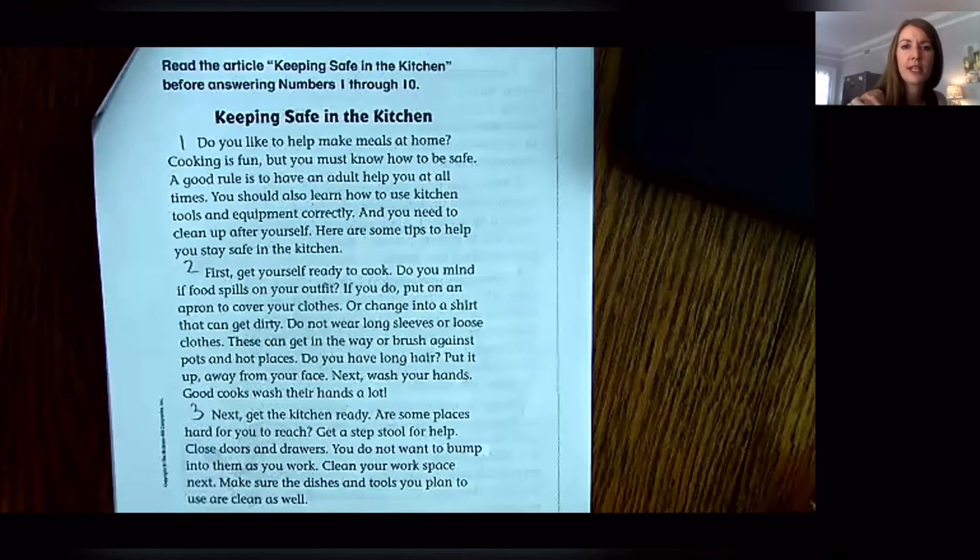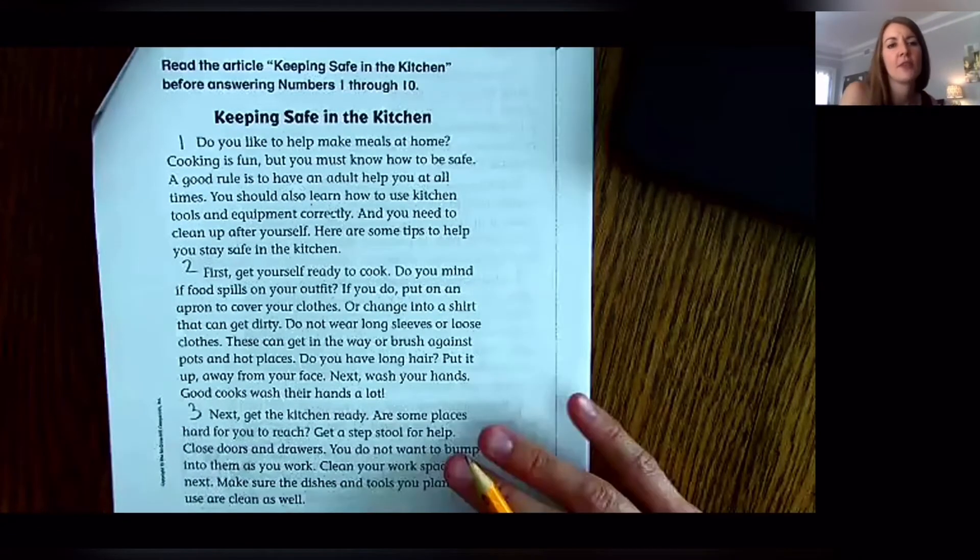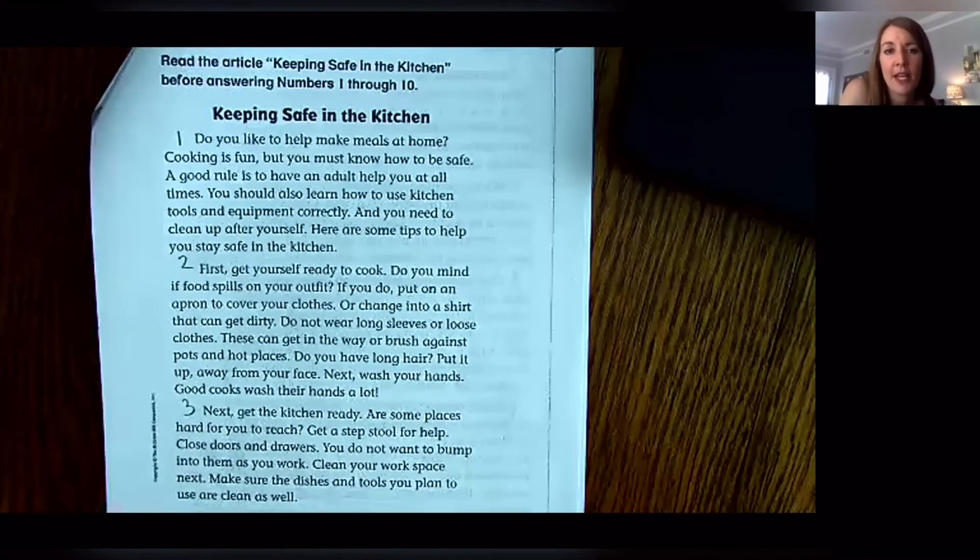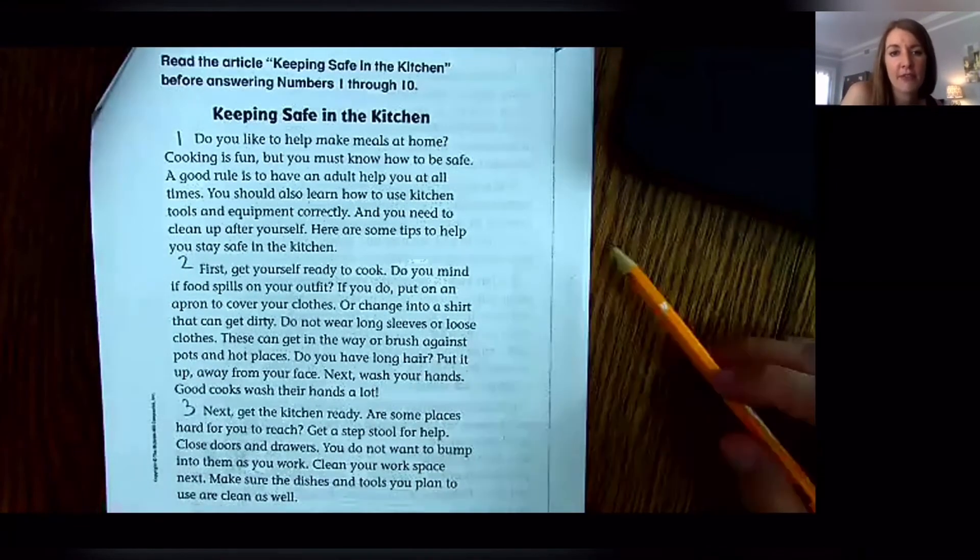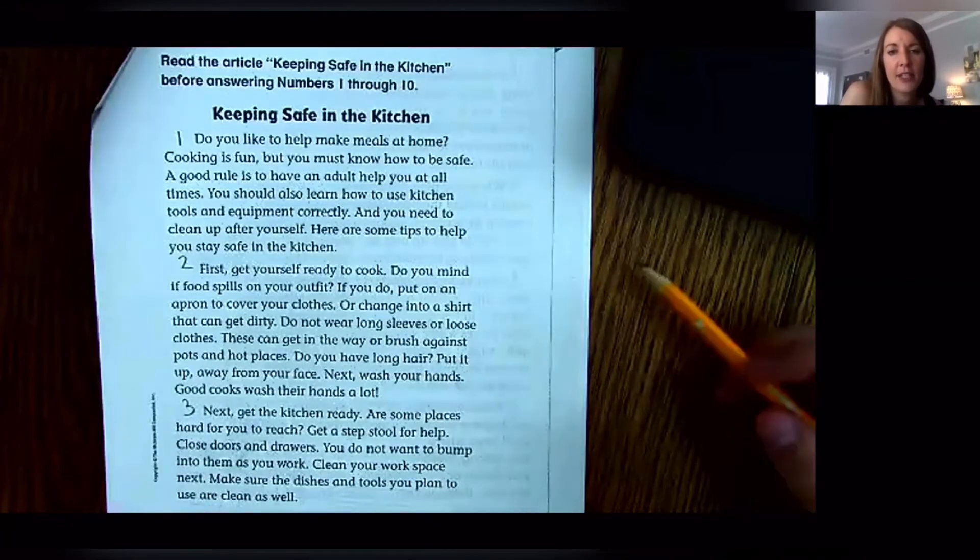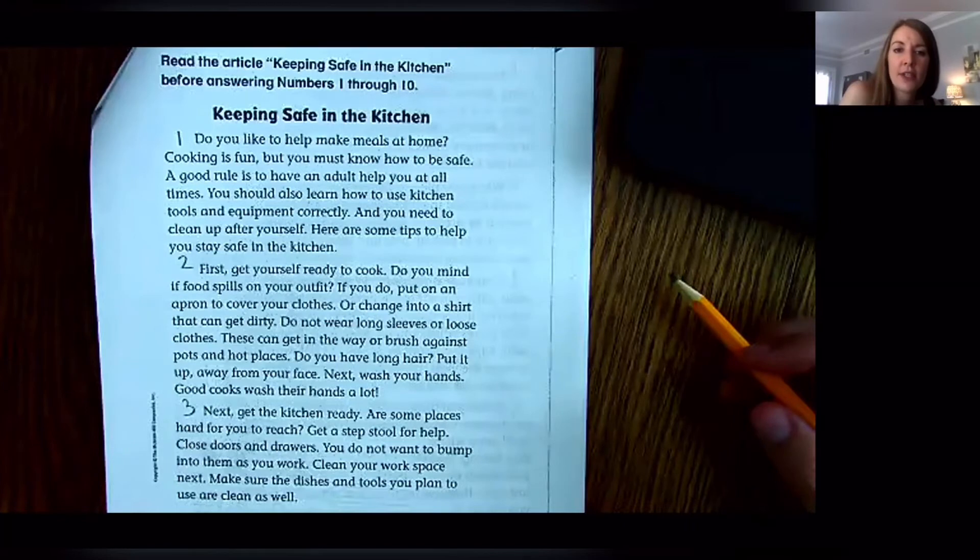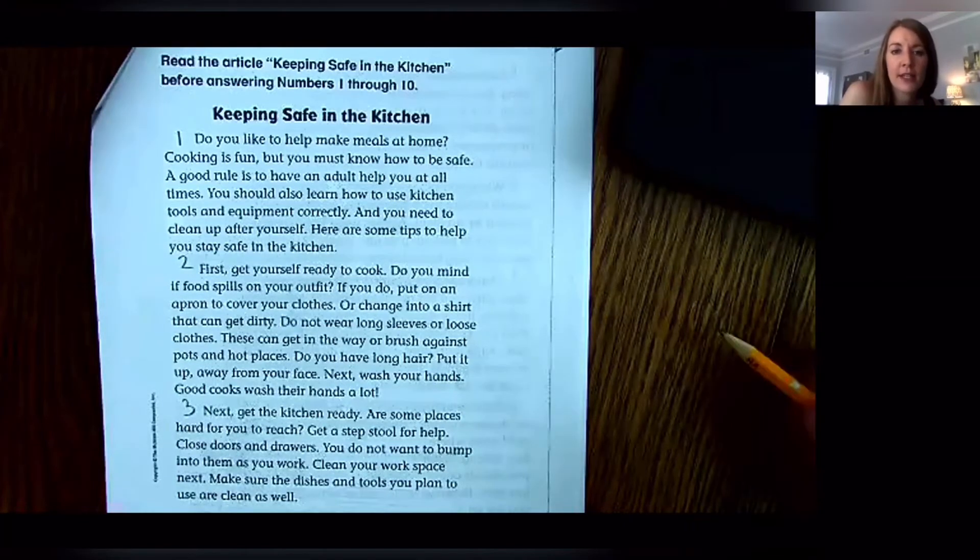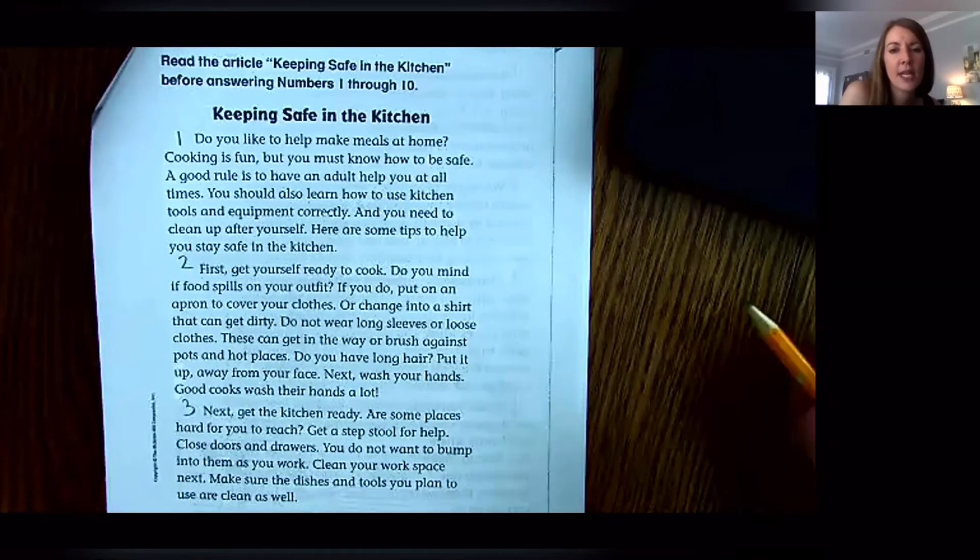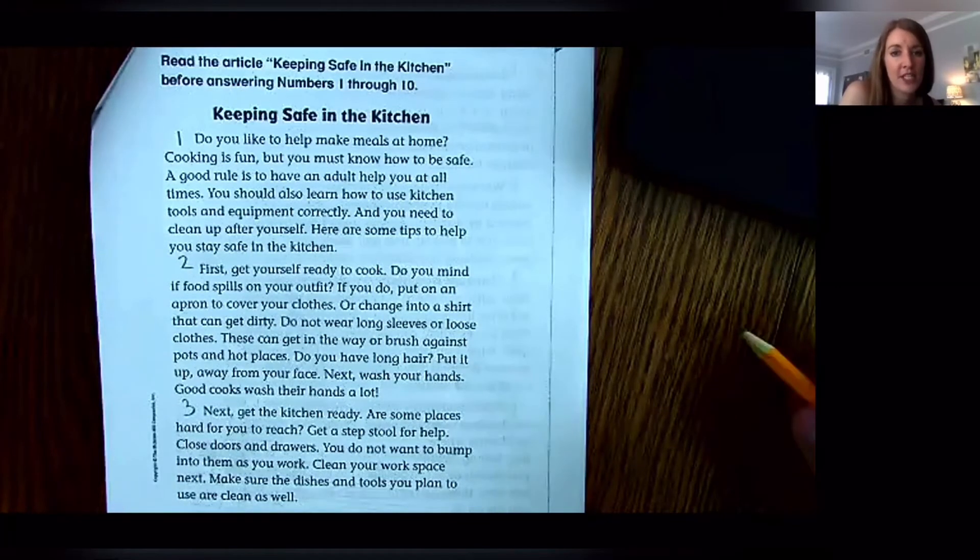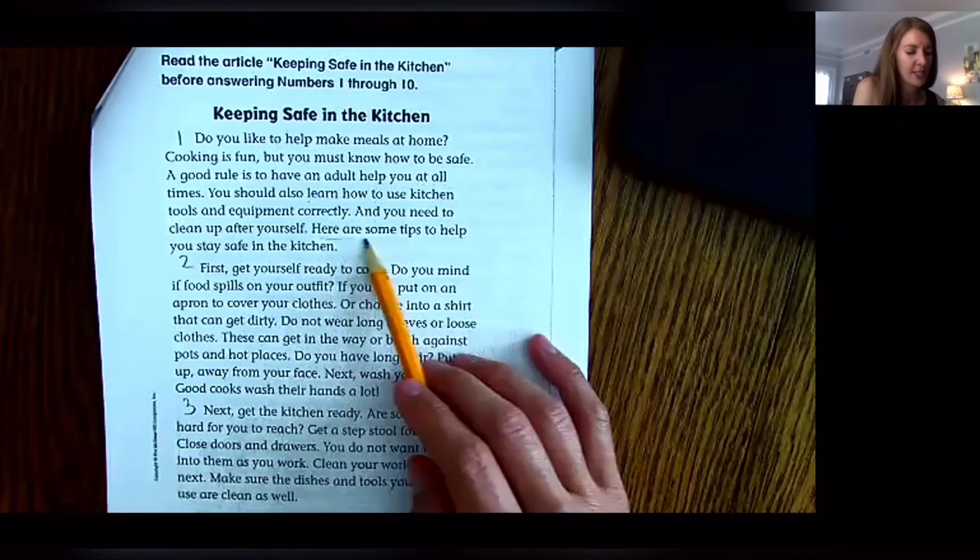All right, I'm just going to go ahead and read through this whole thing so that you have heard it once and then we can talk a little bit about the questions. Keeping Safe in the Kitchen: Do you like to help make meals at home? Cooking is fun, but you must know how to be safe. A good rule is to have an adult help you at all times. You should also learn how to use kitchen tools and equipment correctly, and you need to clean up after yourself. Here are some tips to help you stay safe in the kitchen.